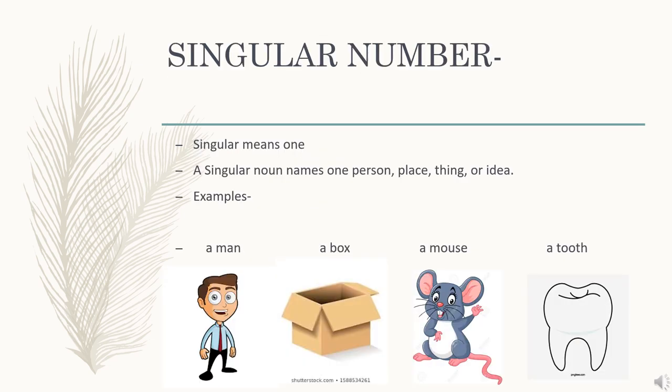Now let's learn what is singular number and what is plural number. Let's start with singular number. Singular means one. A singular noun names one person, place, thing or idea. For example: a man, a box, a mouse, a tooth. Singular number means when we are talking about only one.